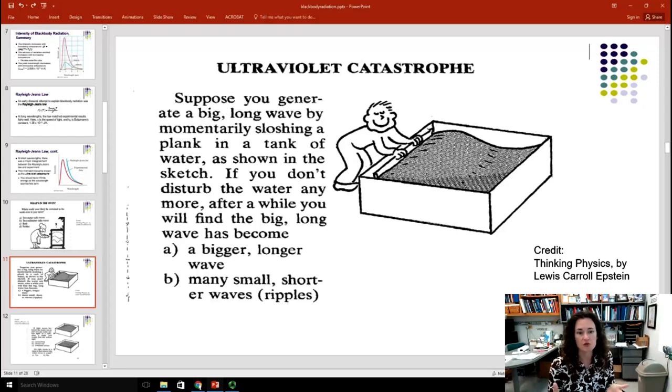Well, what would be more likely to happen? Would your long wavelength wave become a bigger, longer wave, or would it become a whole bunch of really short little ripples? Well, if you've ever played in a bathtub, and if you haven't, I highly recommend that you go home immediately and do this, then you'll see that your long wavelength wave eventually sort of becomes all these little ripples in your wave tank. So that's what happens. A longer wavelength wave, over time, will become a whole bunch of really short waves.